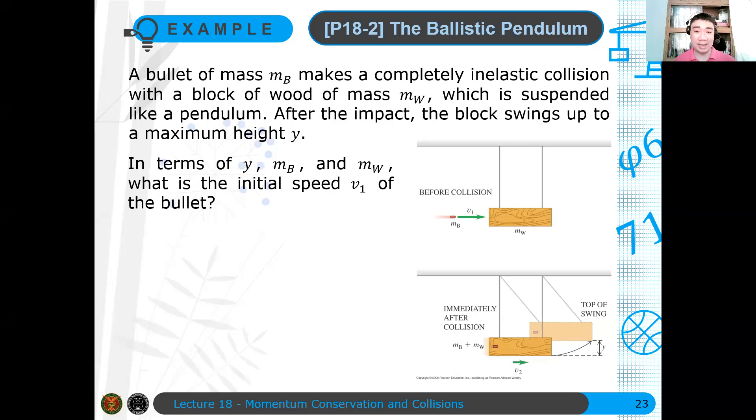In terms of Y, MB, and MW, what is the initial speed V1 of the bullet?